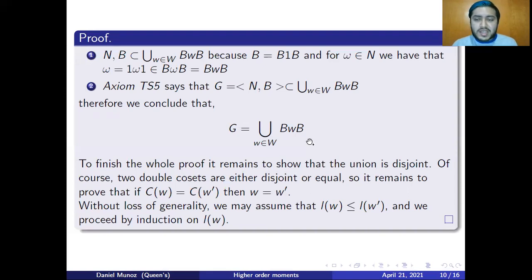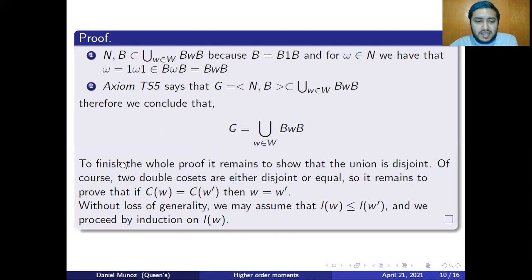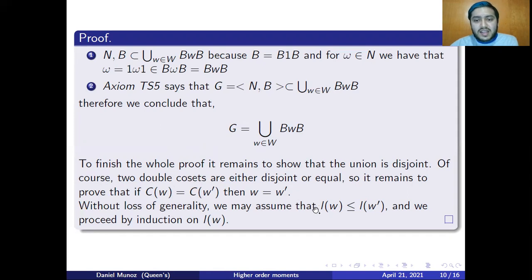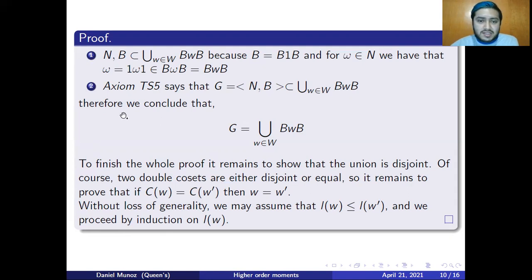To finish the proof, it remains to prove that the union is disjoint. I won't prove this fully, but the idea is to use the fact that two double cosets are either disjoint or equal. So it remains to prove that if C(W) equals C(W'), then W equals W'. Without loss of generality, I can assume the length of W is less than or equal to the length of W', and the rest proceeds by induction on the length of W, using the other axioms.